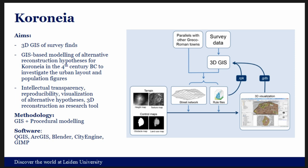I also modeled alternative reconstruction hypotheses on the settlement in one historical phase — the 4th century BC — to investigate urban layouts and population figures. The workflow starts from the terrain, then in CityEngine: creating the street network, applying the rule files, and creating a 3D visualization starting from the survey data and relying on parallels with other excavated sites. The goals included intellectual transparency, reproducibility of the reconstruction, visualizing alternative hypotheses, and using 3D reconstruction as a genuine research tool.